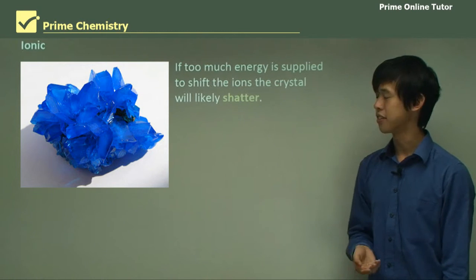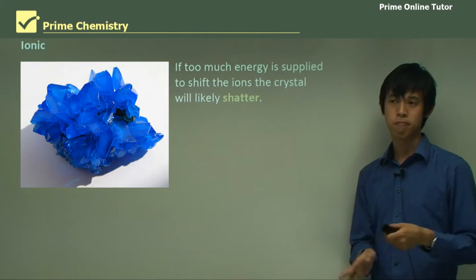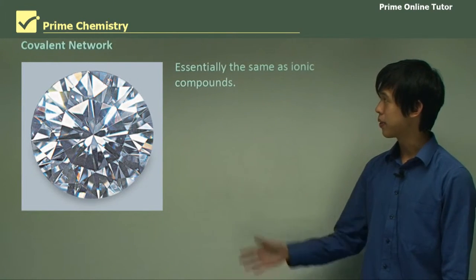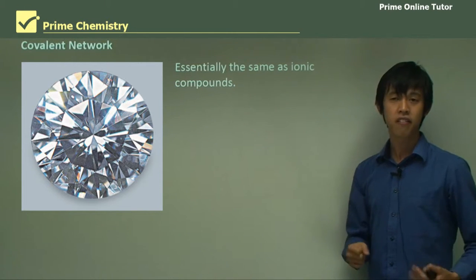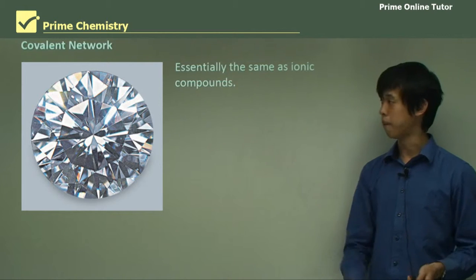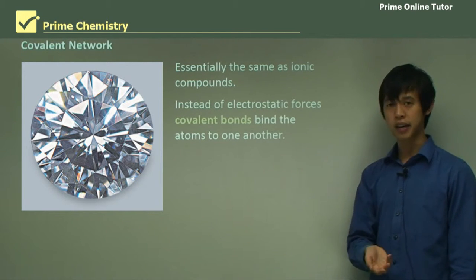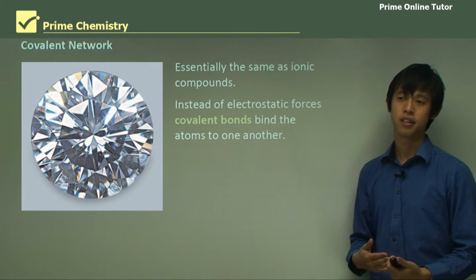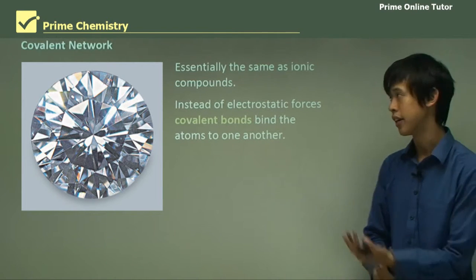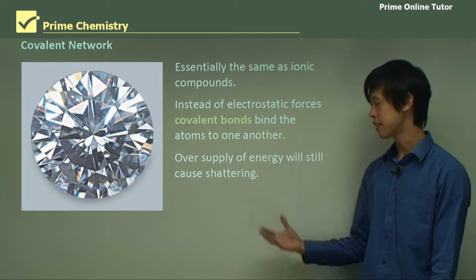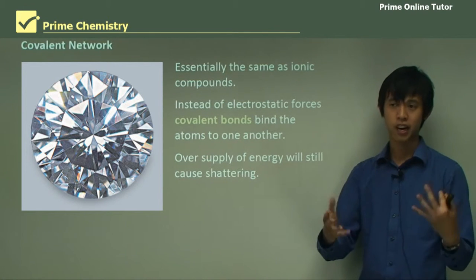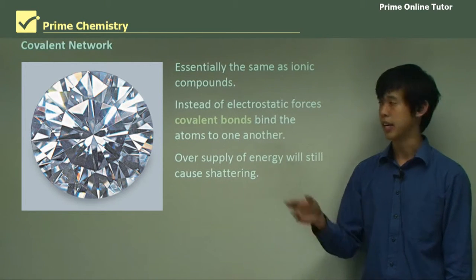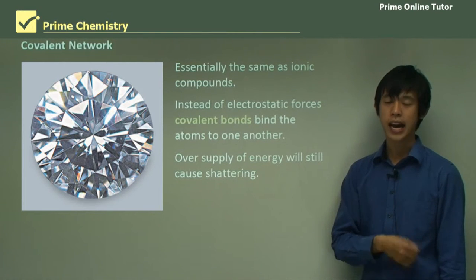If too much energy is supplied to shift the ions, the crystal will likely shatter rather than deform. Covalent network substances are essentially the same as ionic compounds — very, very hard because they're bonded very strongly together. But instead of electrostatic forces holding ions together, we have covalent bonds binding the atoms together. An oversupply of energy will still cause shattering, and the only difference is covalent bonds rather than ionic bonds, and atoms rather than ions.